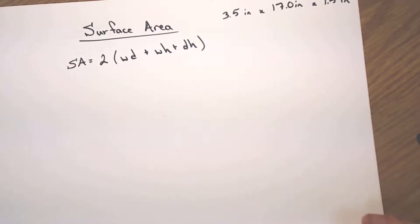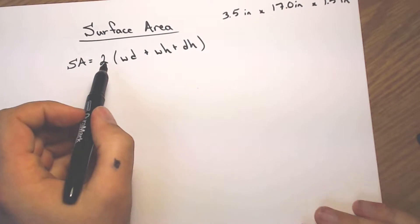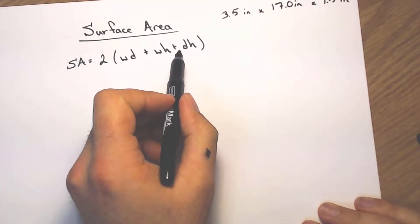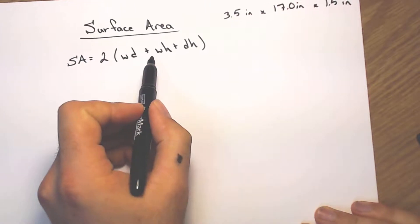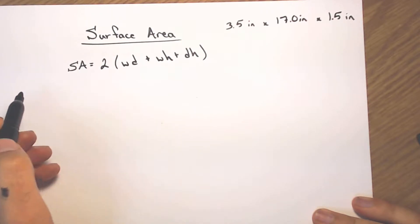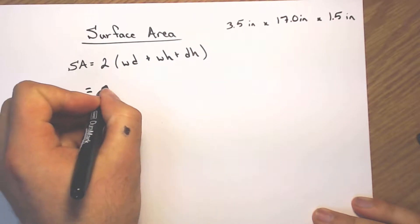Moving on to surface area. Our formula for that is 2 times width times depth, plus width times height, plus depth times height. Making sure we do everything in parentheses first, and then moving on to multiplying by 2. So I'm going to start by substituting in all of those little pieces.